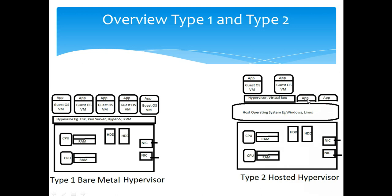You could also have apps running in the background — like Skype or screen recording software — which are taking up resources. You can easily see the difference between both hypervisors. VMware ESX is a type 1 bare metal hypervisor — just remember that.